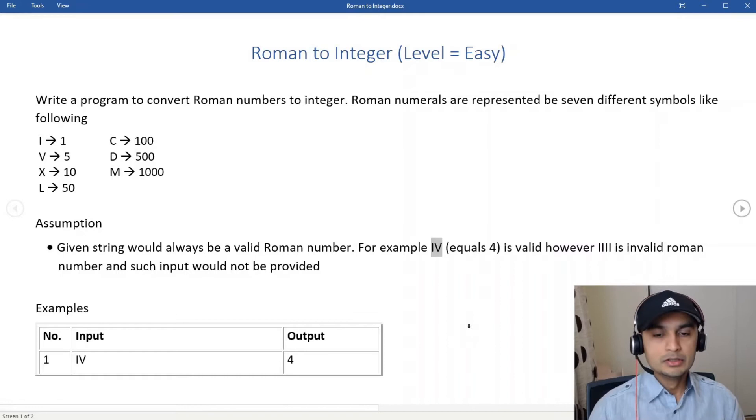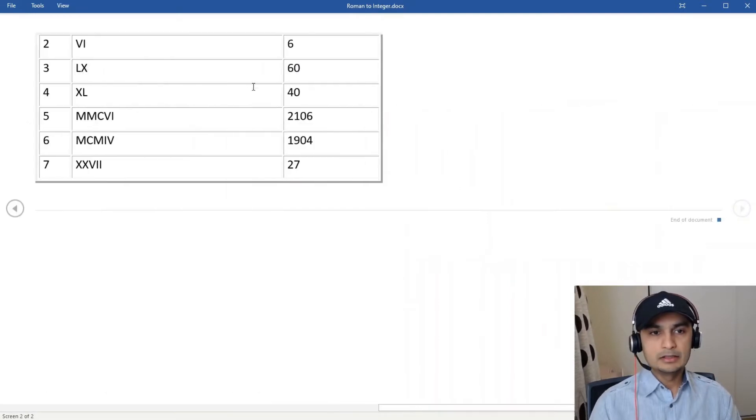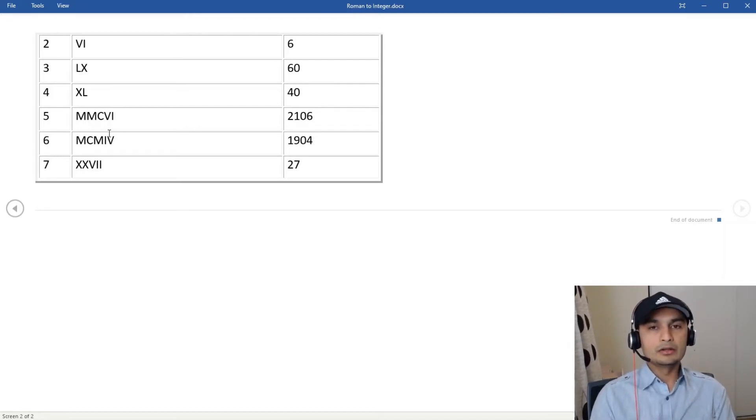So let's look at some of the examples. IV is 4, we just did that. And then VI is 6, LX is 50 plus 10 equals 60, XL is 50 minus 10 equals 40, and likewise. So I do have few examples on the whiteboard, so we'll just go to whiteboard, we'll figure out the algorithm and then we'll come back and we'll do the code.